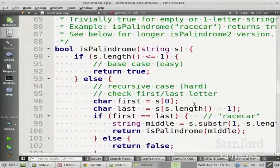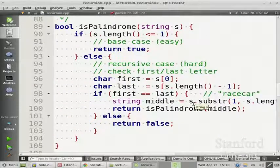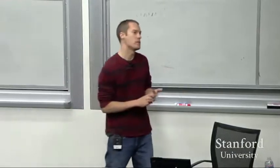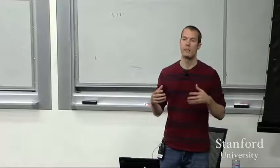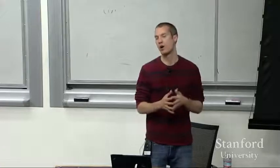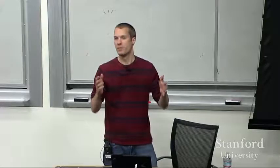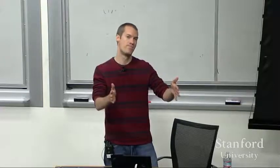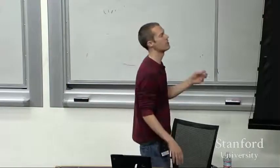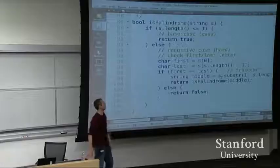We also wrote an is-palindrome function that would tell us whether a string was the same forwards as backwards. In all these problems, you want to ask yourself the same question: how is this problem similar to itself? How can you describe a solution to this problem in terms of a smaller version of the same problem? Telling whether a string is a palindrome - if we just check the end characters, the start and the end character, then we could use recursion to check whether the rest of it was a palindrome. If the rest is a palindrome and the edges are the same, then the whole string must be a palindrome.